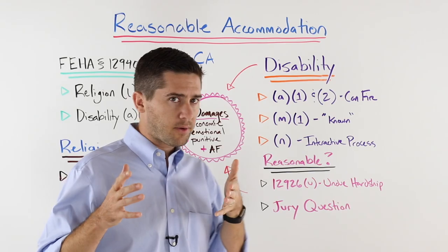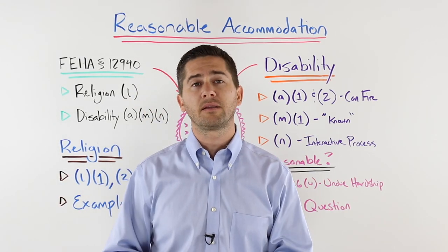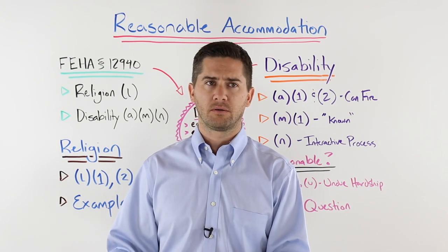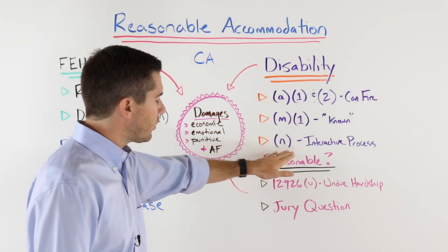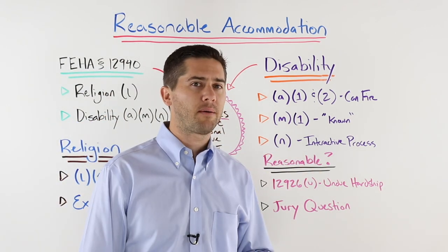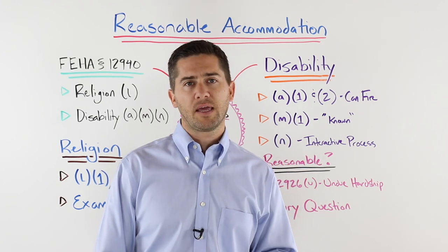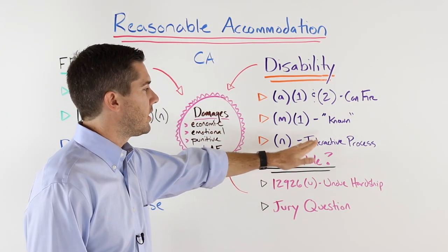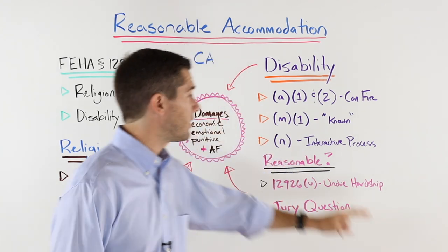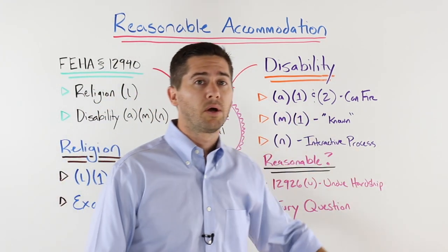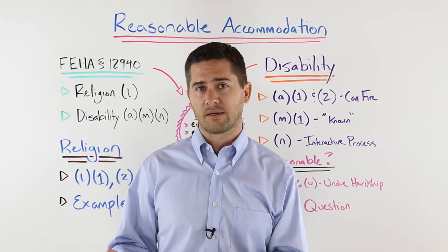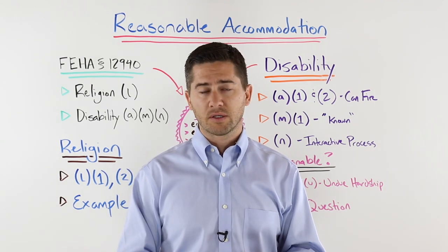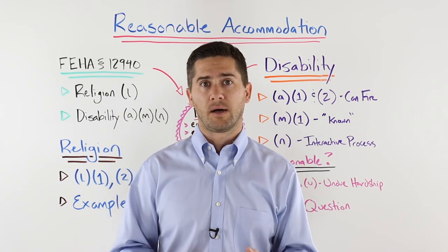Subsection (n) of the same law says the employer is required to engage in the interactive process to find a reasonable accommodation. Basically, the employer needs to be proactive in looking for a reasonable accommodation and engage with that employee. If after engaging in that interactive process they find there is no reasonable accommodation, then they can fire the employee as allowed under subsection (a)(1) and (2). If you're an employee who was fired because of a disability and the employer wasn't proactive — there was no discussion about reasonable accommodations and the employer knew about your disability — contact an employment lawyer.